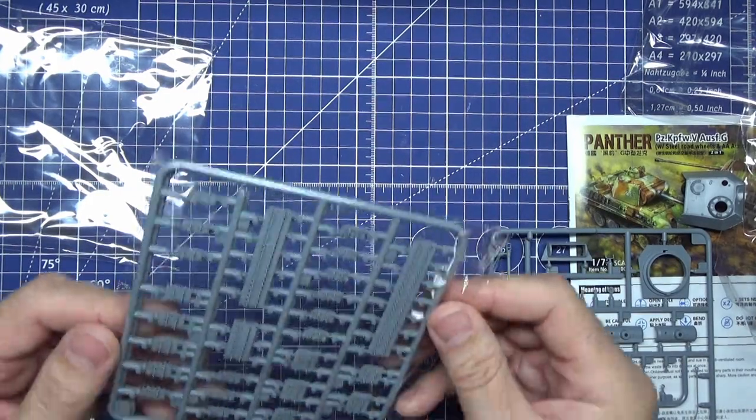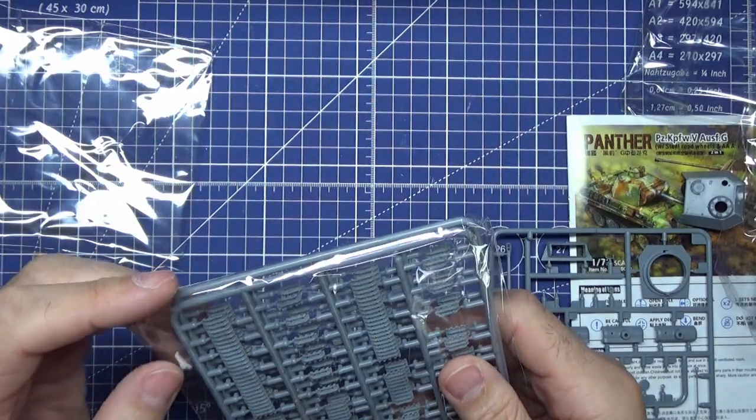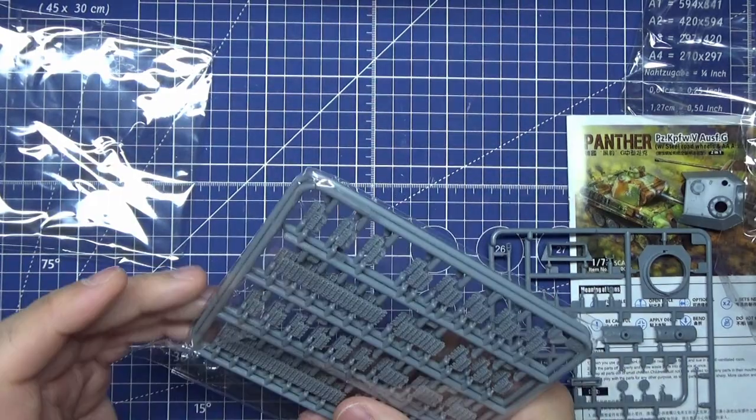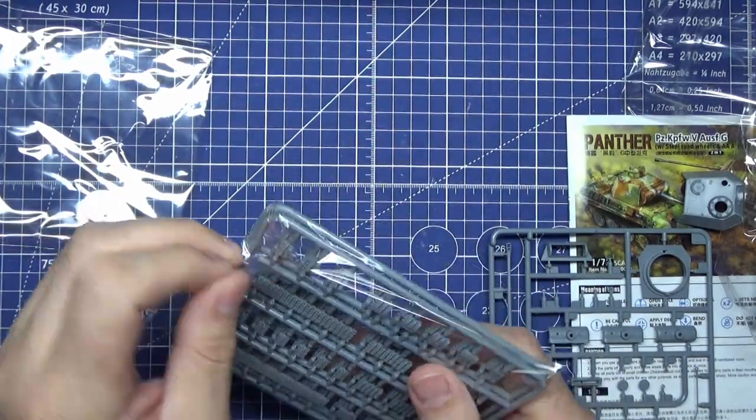The next one are tracks. Well, they look like they're link and length.